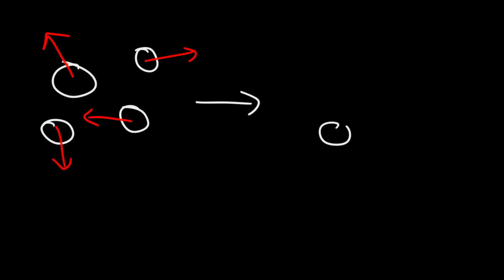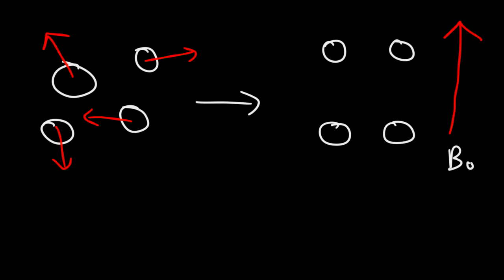A proton has a property called spin, and if you studied physics, you know that a moving charge creates its own magnetic field. So you can think of the protons as generating their own magnetic field. If we have a sample of protons, their magnetic fields will have a random orientation. But if we place them in an applied magnetic field — let's say going in the upward direction, which we'll call B0 — then the magnetic fields of the protons can do one of two things: they can align with the external magnetic field, or they can align against it.